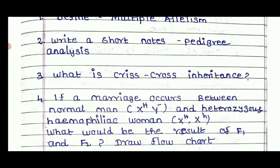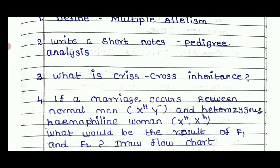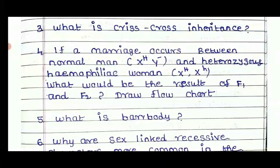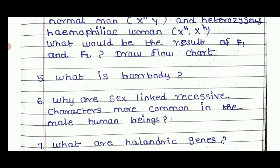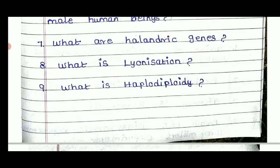For Chapter 4, Genetics, important questions include: define multiple allelism; write short notes on pedigree analysis; what is criss-cross inheritance; why are sex-linked recessive characters more common in males in human beings; what are allopatric genes; and what is haplodiploidy.